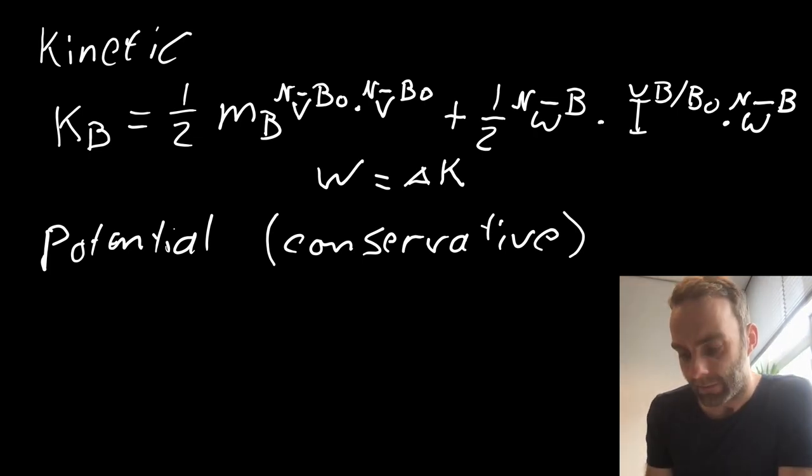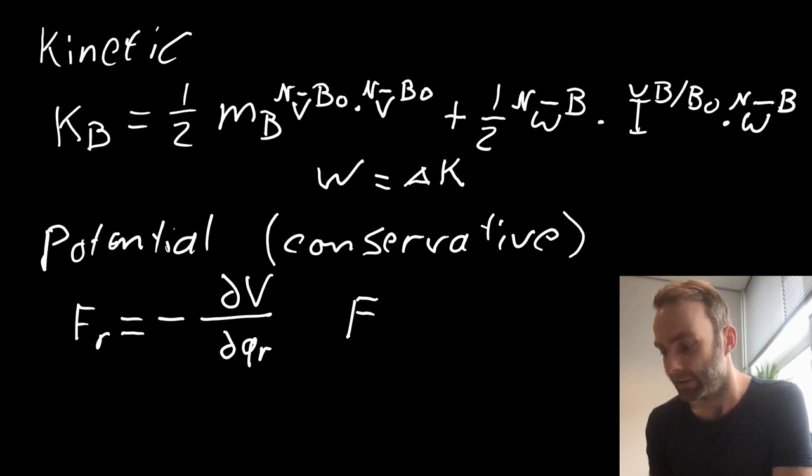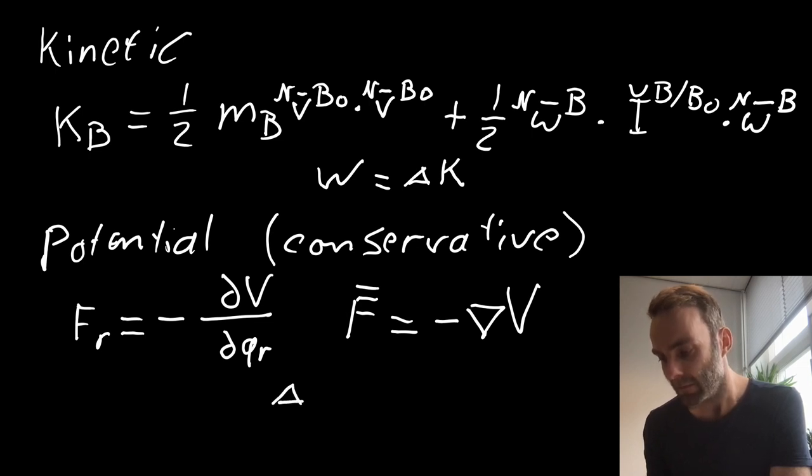Next to this kinetic energy we can put the potential energy which is related to conservative forces. And a conservative force can be shown to be equal to the negative of the partial derivatives of all the generalized coordinates to the potential function V, which can also be written as the force, that is conservative, is equal to the negative gradient of V. And for such a conservative system, we already saw that the difference in kinetic energy plus the difference in potential energy equals zero.